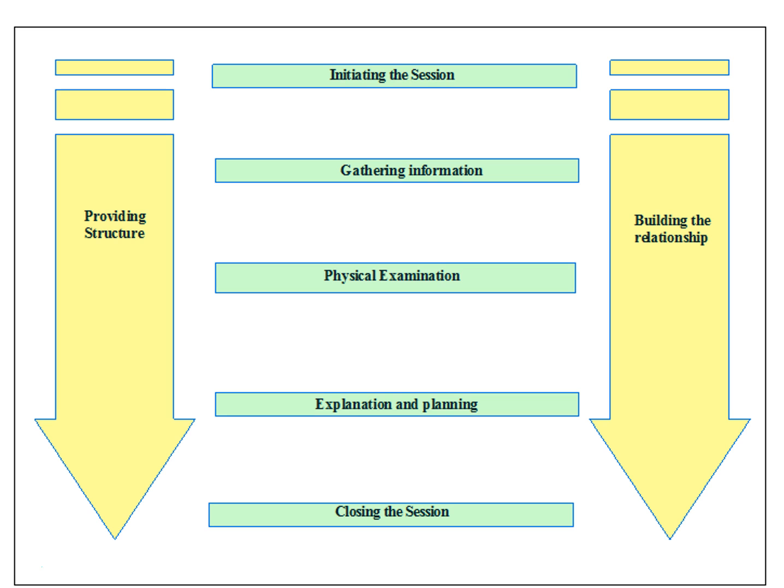This is an overall structure of the Calgary Cambridge model, which shows a structured outline where the consultation is initiated and then information is gathered about symptoms and the chronology of events. This may then be followed by physical examination if deemed appropriate, then explanation to the patient and planning, and finally a closing of the consultation. Throughout all of this structured format, it is providing structure to the consultation while also building up a relationship of trust with the patient.